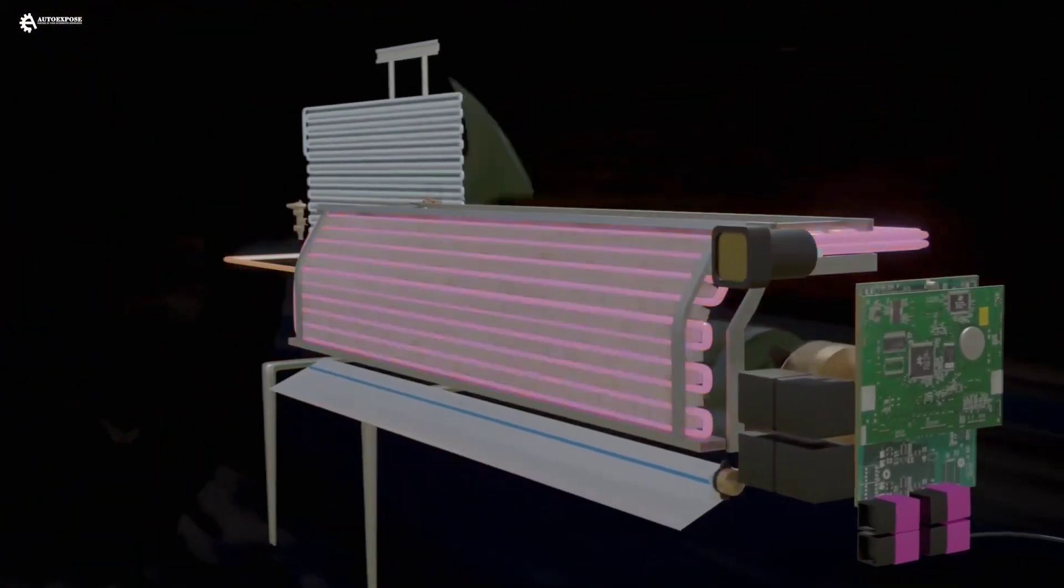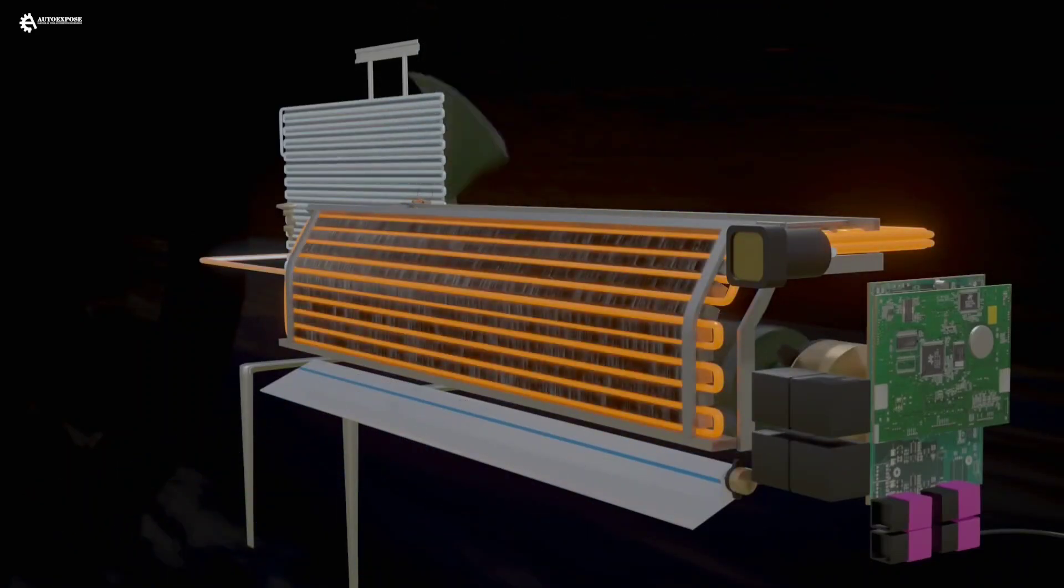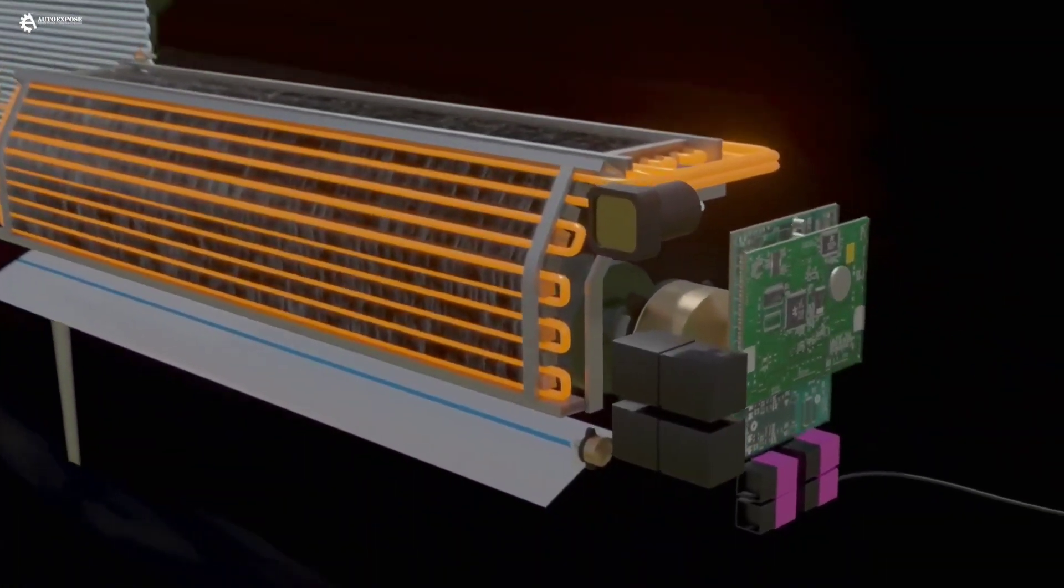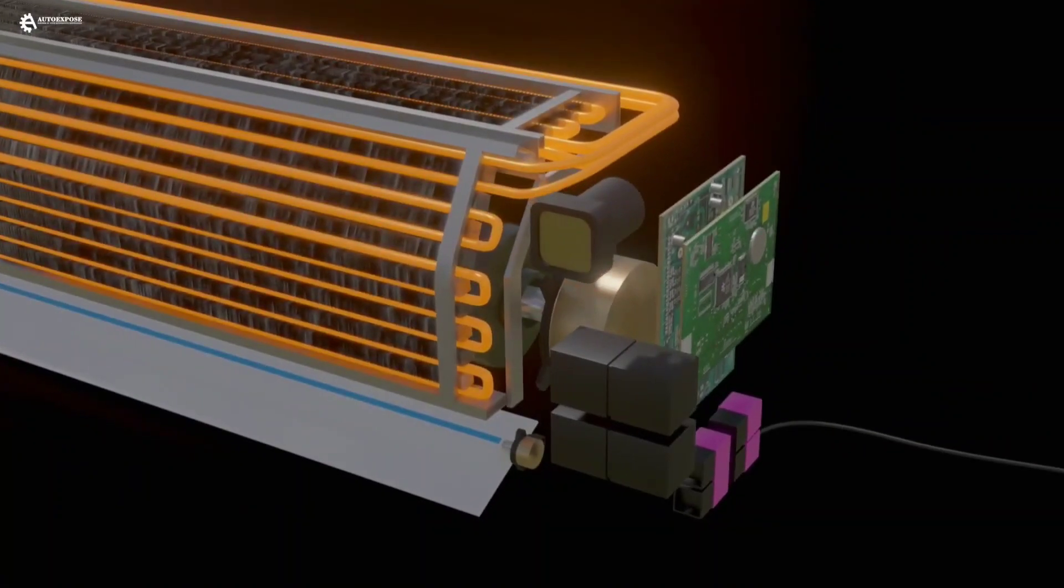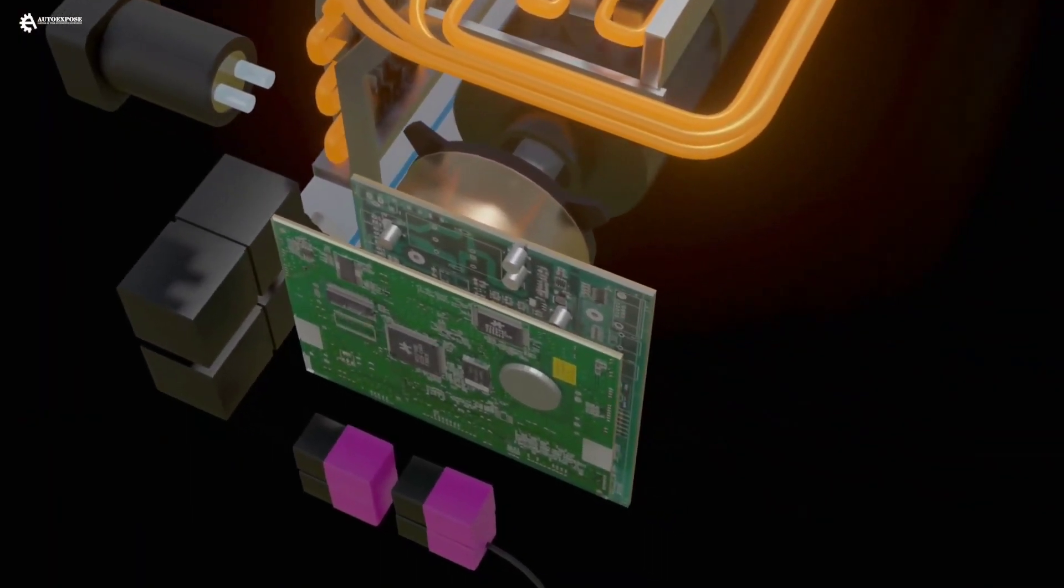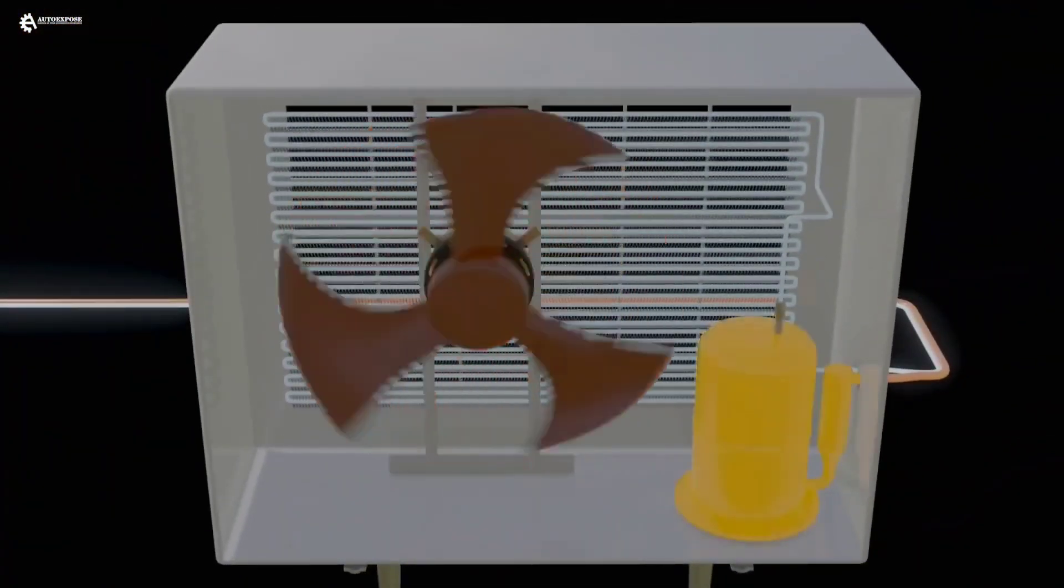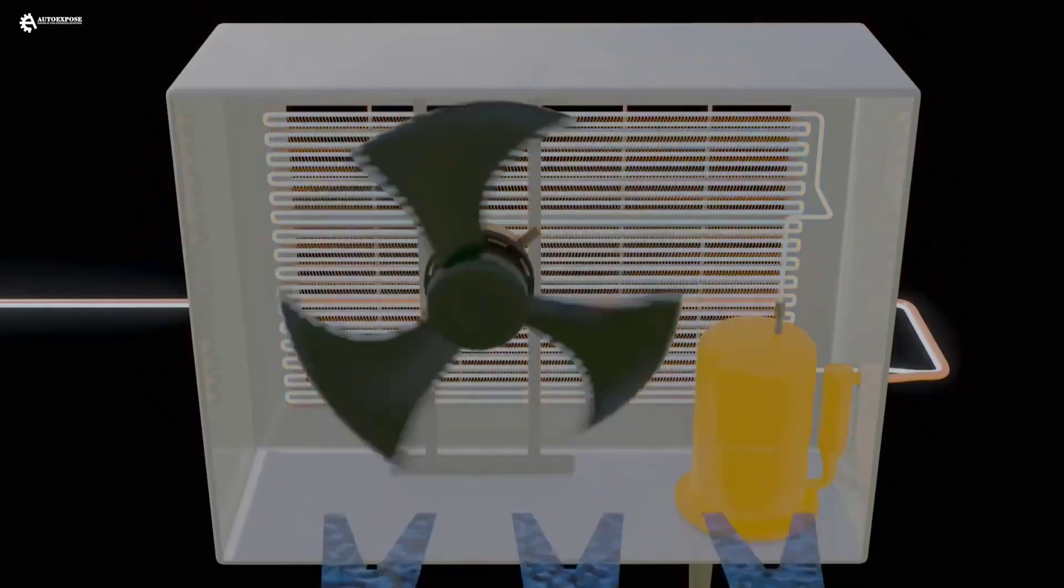The AC temperature settings, blower speed, and other modes are controlled by the PCB located next to the evaporator. This PCB is connected to the condenser fan and compressor. If we set the AC temperature to the lowest level, the compressor and fan will rotate at maximum speed to produce optimal cooling.